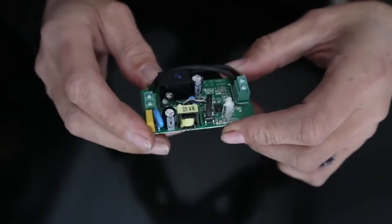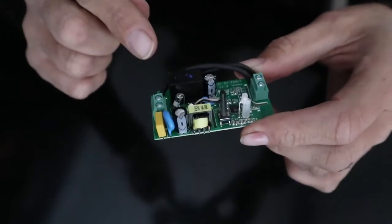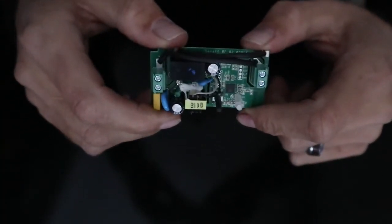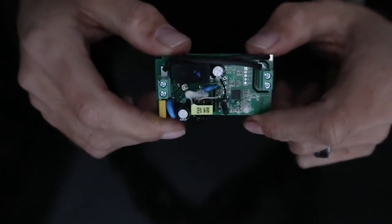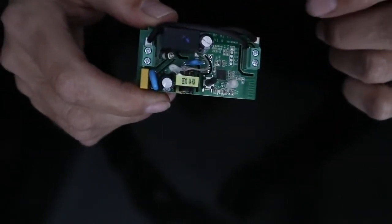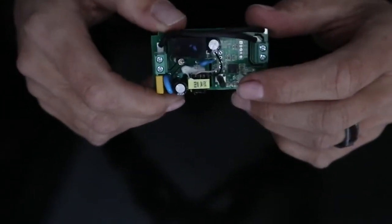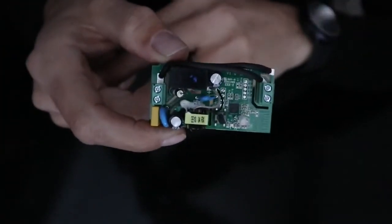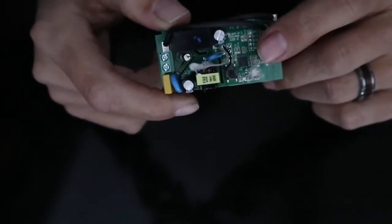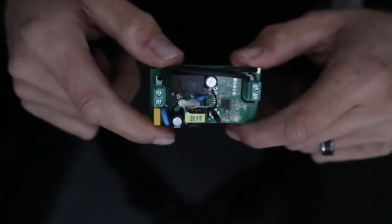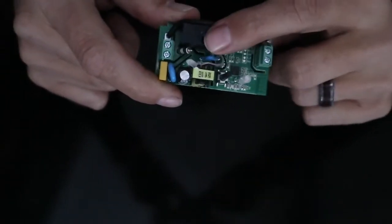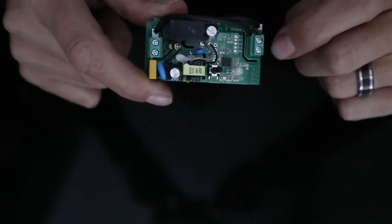We're going to use something these guys shipped with called an inching mode, where it will trigger whatever you are triggering for a period of time - anything from I think 0.5 seconds up to 10 seconds. For the purpose of this video and opening the garage door, we're going to use the inching mode to switch on this little relay for 0.5 seconds.